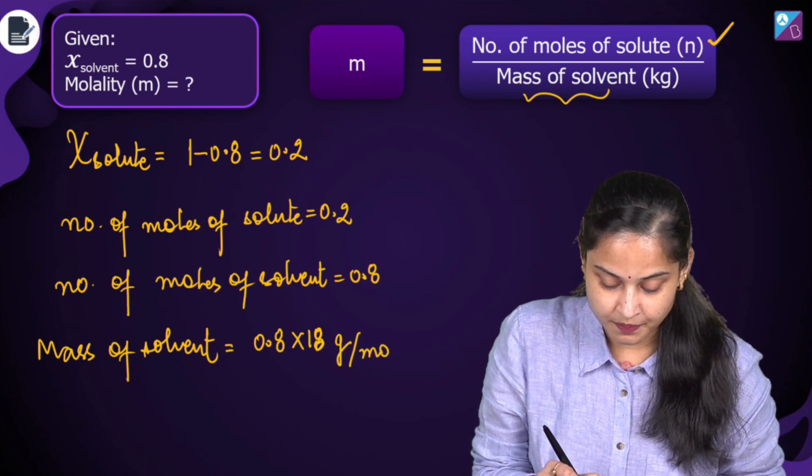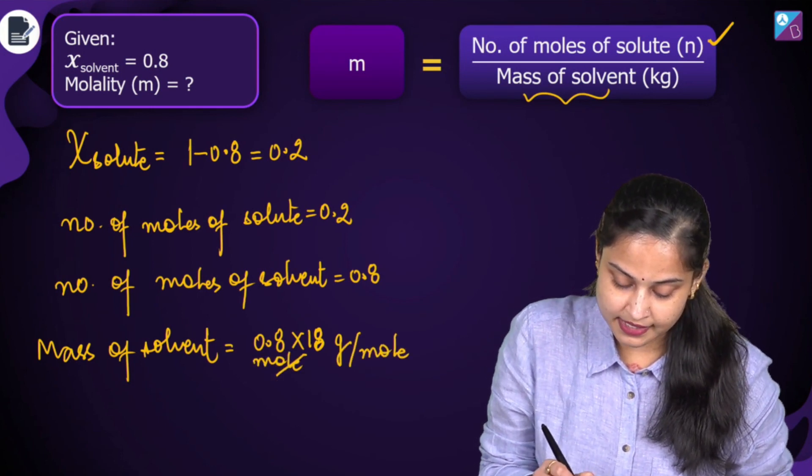So it's grams per mole and it was in moles, so mole cancels out with mole.